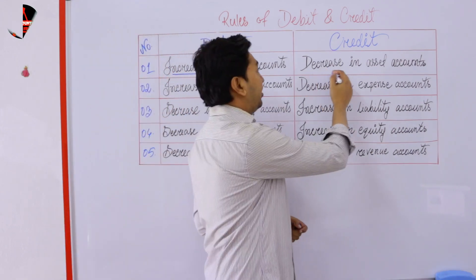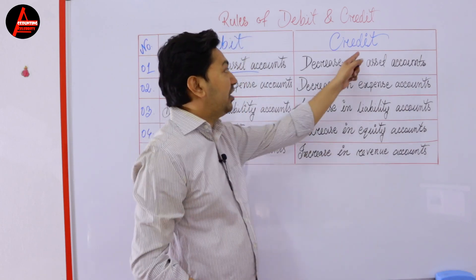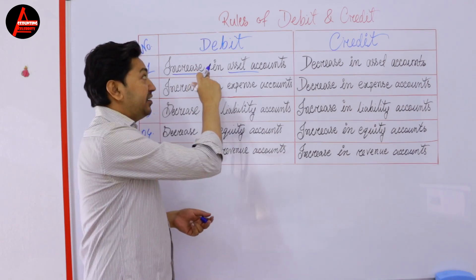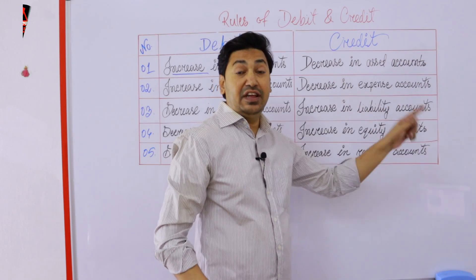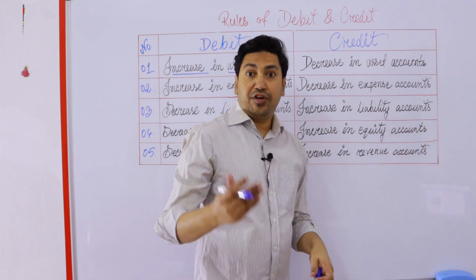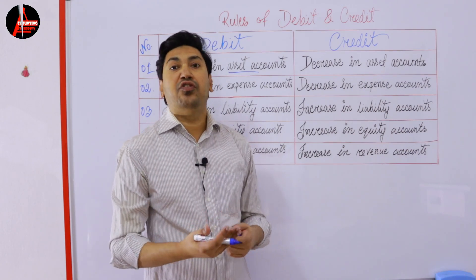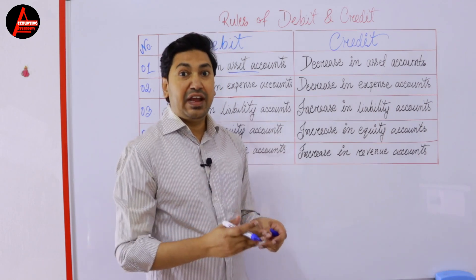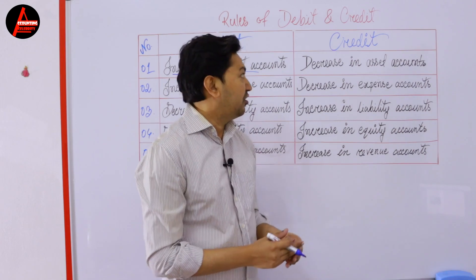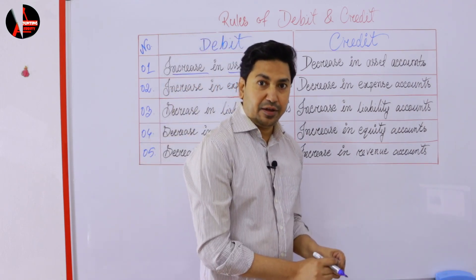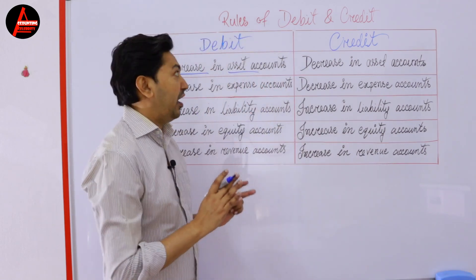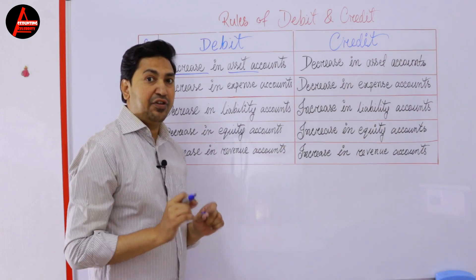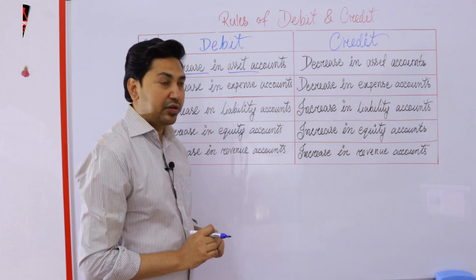Now, decrease in asset account will be credited. When your asset increases, your asset is debited, and when it decreases, your asset will be credited. For example, you sold some old furniture. You sold furniture — furniture is an asset. This furniture will be decreasing in your business, so furniture will be credited. Remember the rule: increase in asset will be debited and decrease in asset will be credited.